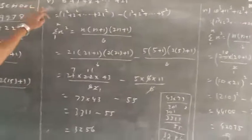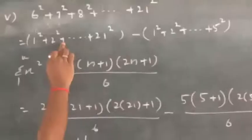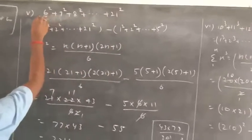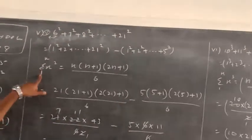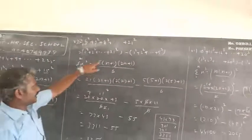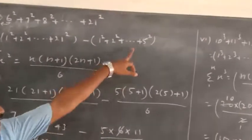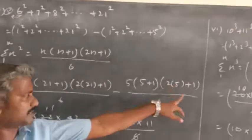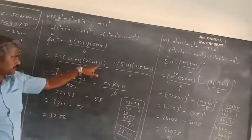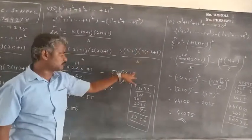Next, fifth sum: 6 square plus 7 square plus 8 square plus going on to 21 square. So write it as 1 square plus 2 square plus etc. to 21 square, minus 1 square to 5 square — in front is 5, so 5 square. Sum of square formula: n into n plus 1 into 2n plus 1 by 6. n value is 21. So 21 into 21 plus 1, 2 into 21 plus 1 by 6, minus 5 into 5 plus 1, 2 into 5 plus 1 by 6. 2 into 21 is 42 plus 1 is 43 by 6, minus 2 into 5 is 10 plus 1 is 11 by 6.